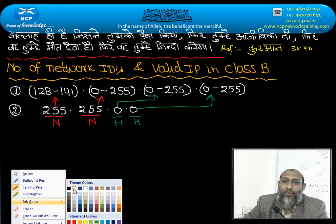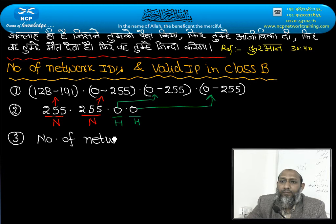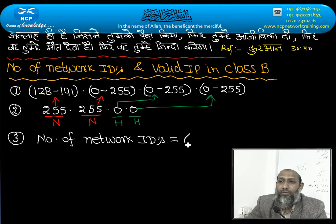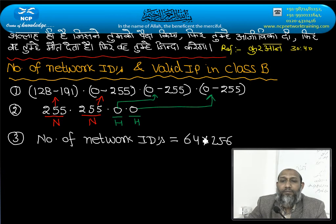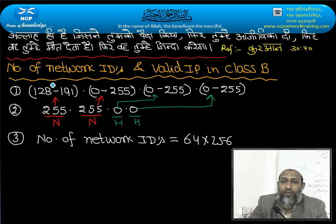Step number three, number of network IDs. Network IDs, they will be 64 into 256. How is this? Let's see how it is. The first bracket is here to here, how many combinations are? 64.